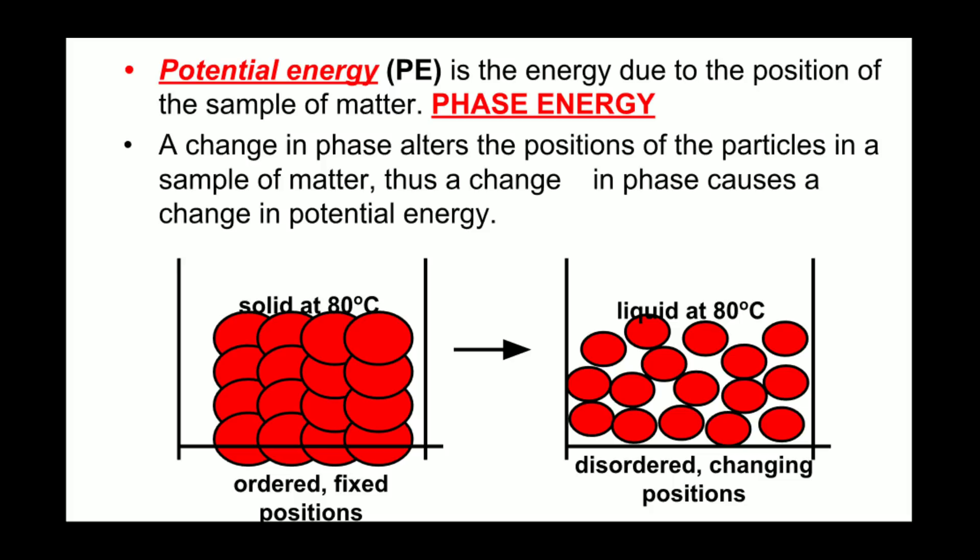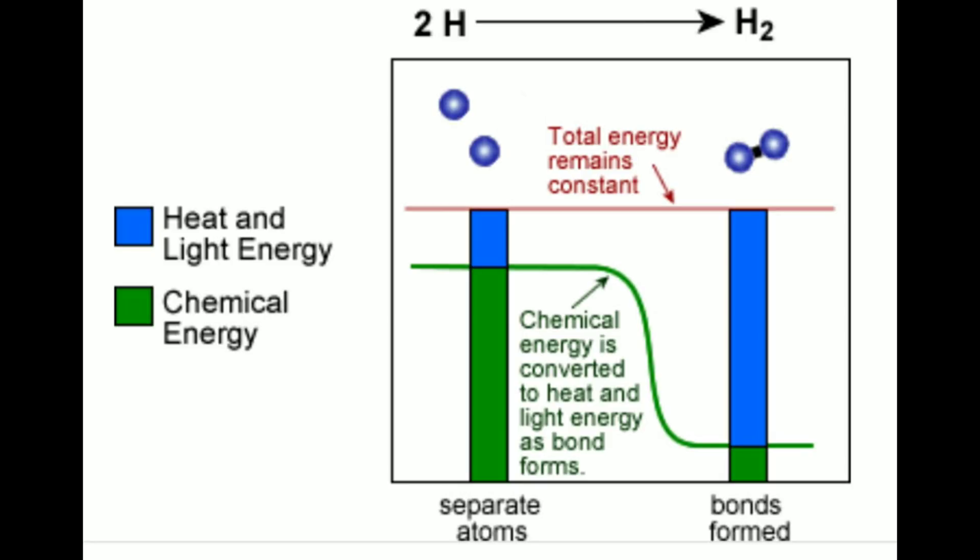Chemical changes also experience potential energy, but those are a little bit more complicated. Here we have a chemical change with a bond being formed. This is a change in potential energy because the atoms of hydrogen are coming together. Their positions are less far apart, so here is a change in potential energy.